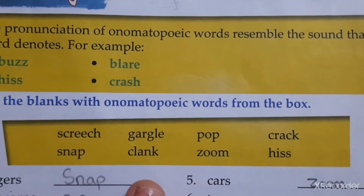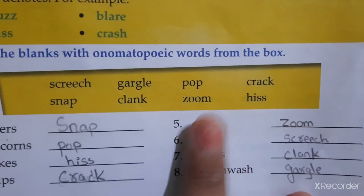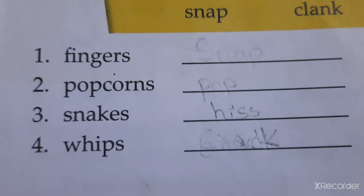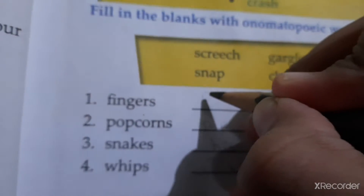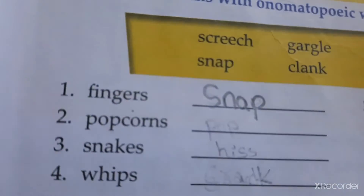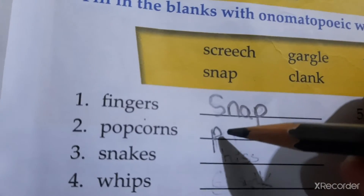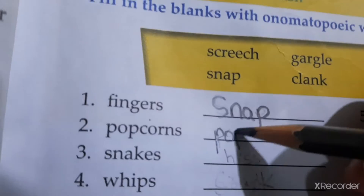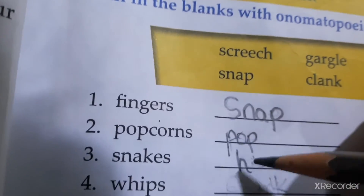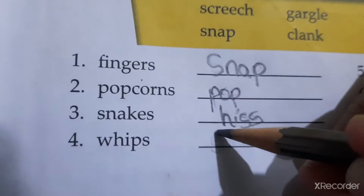Here is the box. Using these words, you need to fill in the blanks — I have already filled them but I will do them again for you. For fingers, the onomatopoeic word will be 'snap'. For popcorn, 'pop'. For snake, 'hiss' — I am writing this word from the brackets given above. Then whips — whips means 'crack'.